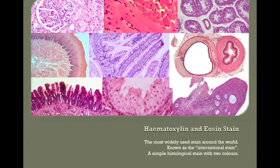The hematoxylin and eosin stain, abbreviated H&E, is the most commonly used stain around the world. It is widely used in hospital diagnostic laboratories and in research. It's a simple stain with two colours, staining tissues purple and pink. You can see the variety of pink and purple in these H&E images.